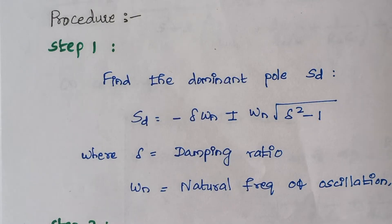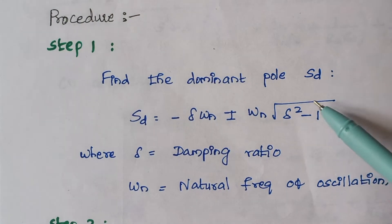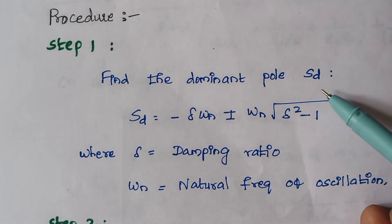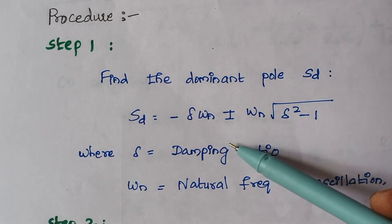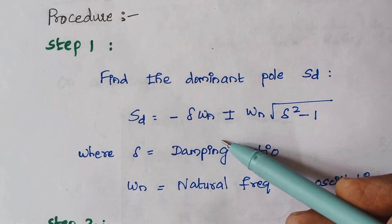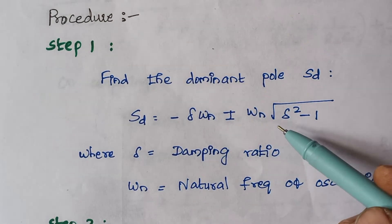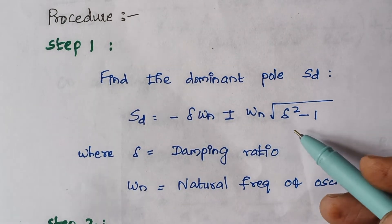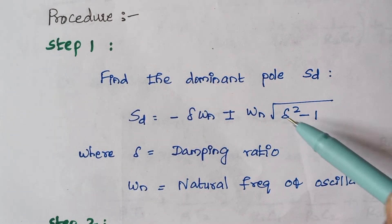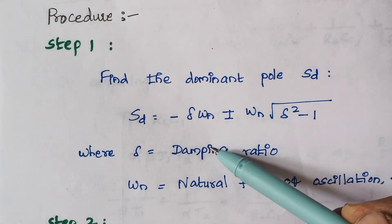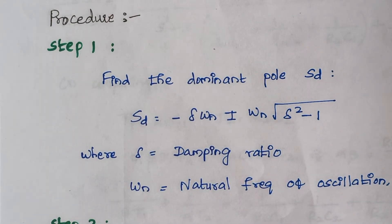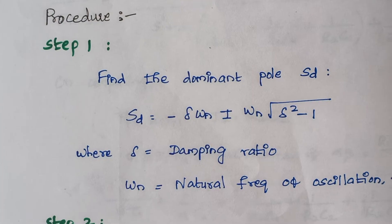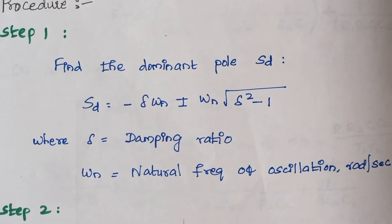Step 1: Find the dominant pole, denoted as SD. The dominant pole is given by the formula: minus zeta·omega_n plus or minus omega_n times the square root of (zeta squared minus 1). Here, zeta is the damping ratio and omega_n is the natural frequency of oscillation, with units of radians per second.